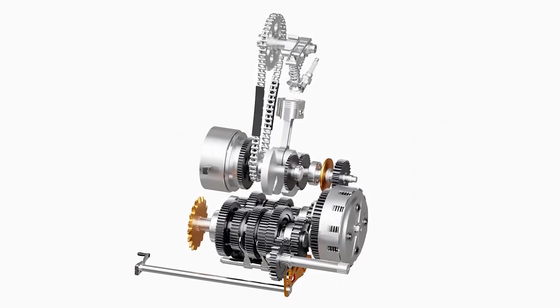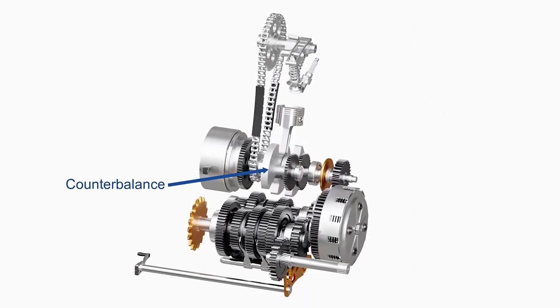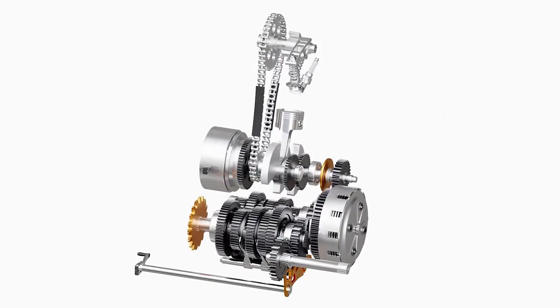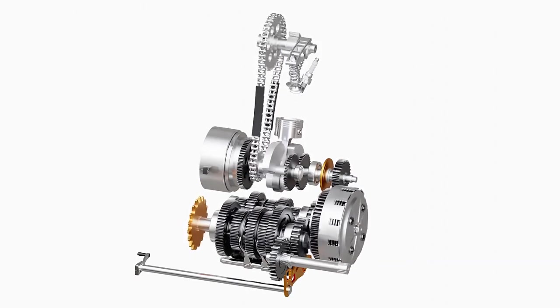Single-cylinder engines generally use a counterbalance to reduce the vibration caused by unbalanced forces. The clutch helps in smooth transfer of power from the crankshaft to the transmission system.